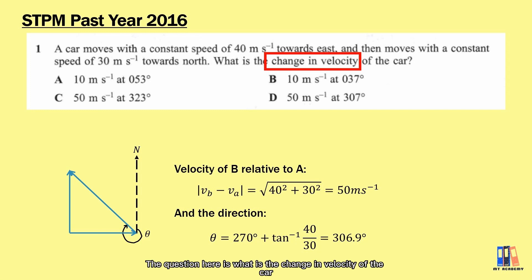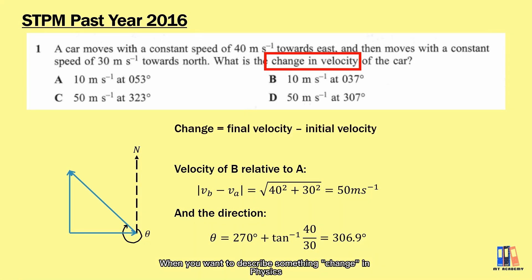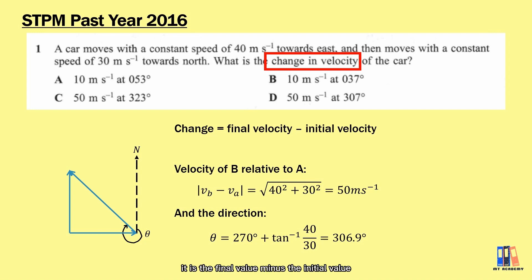The question is: what is the change in velocity of the car? When you want to describe something that changed in physics, it is the final value minus the initial value.